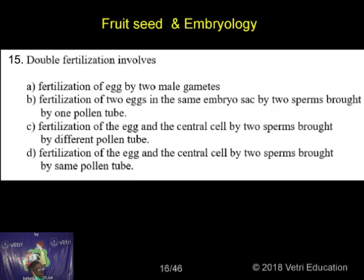Double Fertilization involves: A) fertilization of the egg by two male gametes; B) fertilization of two eggs in the same embryo sac by two sperms brought by one pollen tube; C) fertilization of the egg and the central cell by two sperms brought by different pollen tubes.